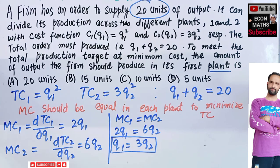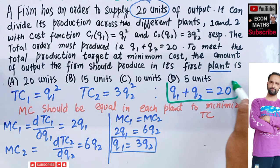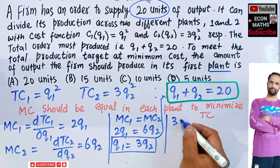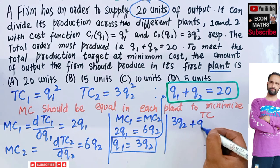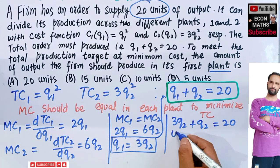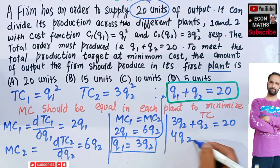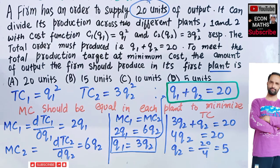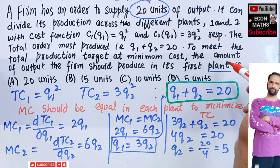We now plug the value of Q1 into the constraint equation. Substituting Q1 equals 3Q2 into Q1 plus Q2 equals 20, we get 3Q2 plus Q2 equals 20, which gives 4Q2 equals 20, and therefore Q2 equals 5. The firm should produce 5 units in Plant 2 to minimize cost.